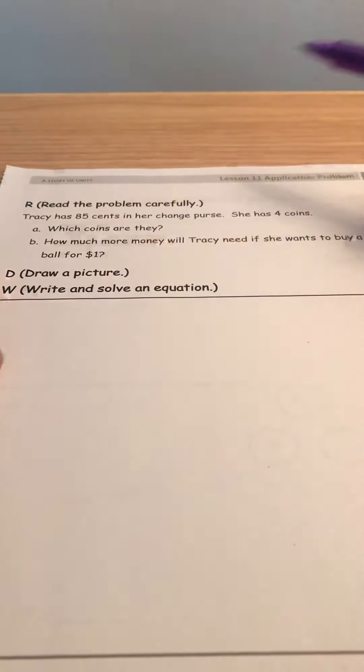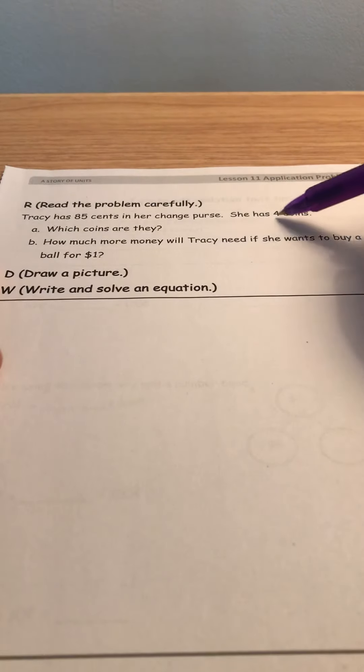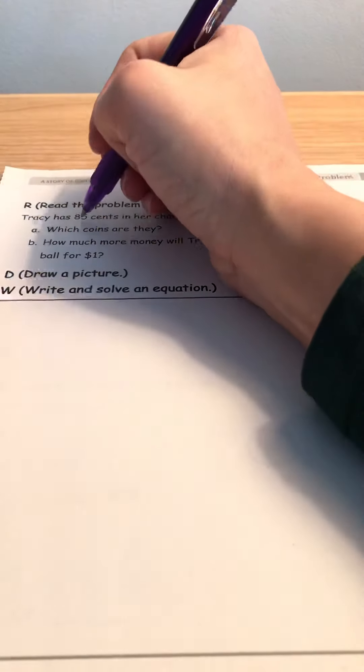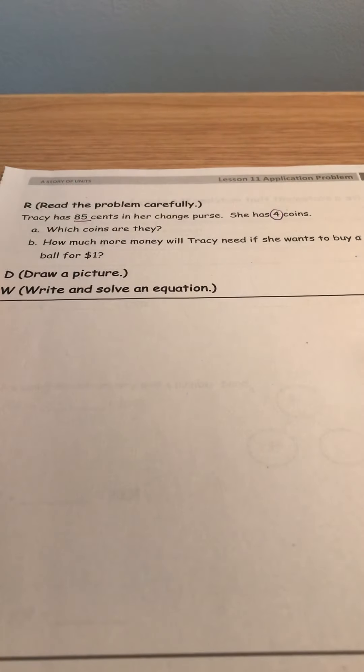Let's go ahead and read the problem carefully together. It says Tracy has 85 cents in her change purse. She has four coins. Circle the word four or the number four. Which coins are they? So we need four coins and we need them to make 85 cents, right?